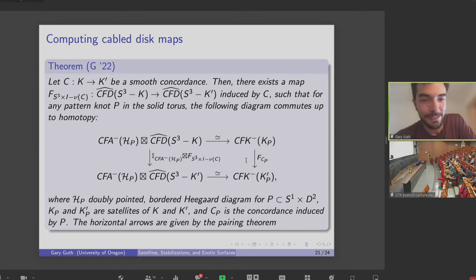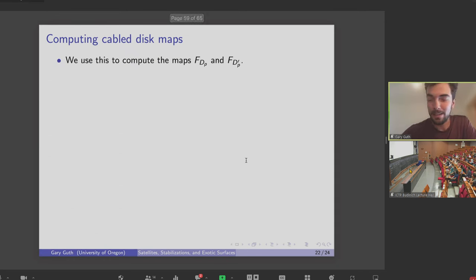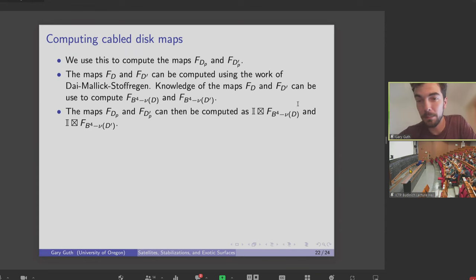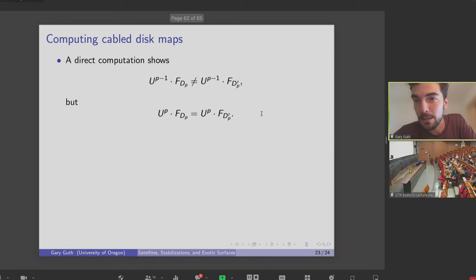So here is basically how the rest of the proof goes. You can use the fact that, okay, you know what FD and FD prime are. And you can sort of bootstrap that knowledge to figure out what the maps associated to the complements of these two disks should be. And then that previous theorem tells you that if you want to compute the maps induced by these cable disks, that you can compute these as some tensor product with these maps associated with the complements of these disks. Once you do that, there's just a direct computation that shows if you multiply these two maps by U to the P minus 1, the maps are still distinct. But a single additional power of U, the maps become equal.